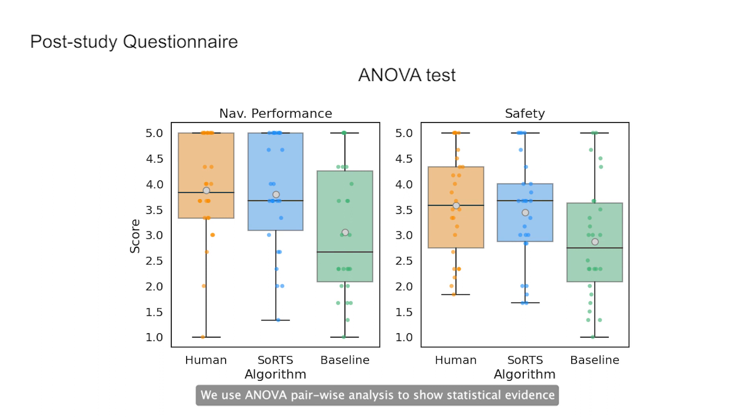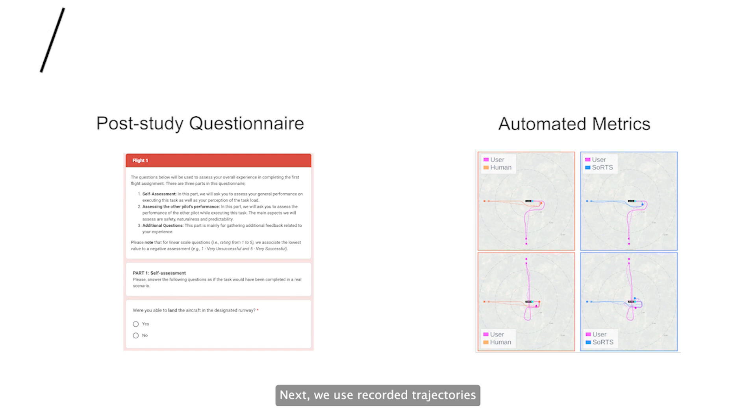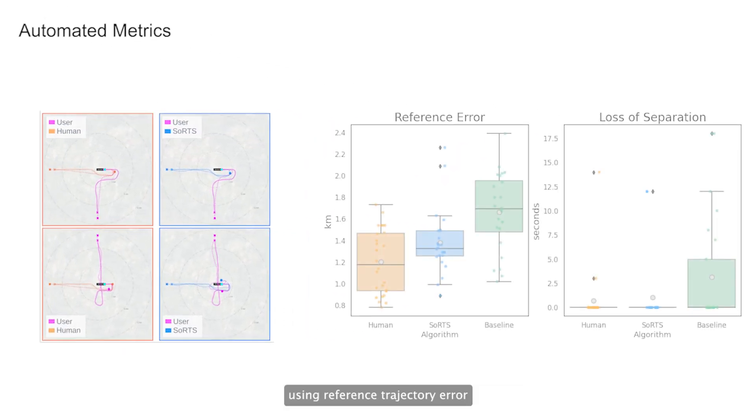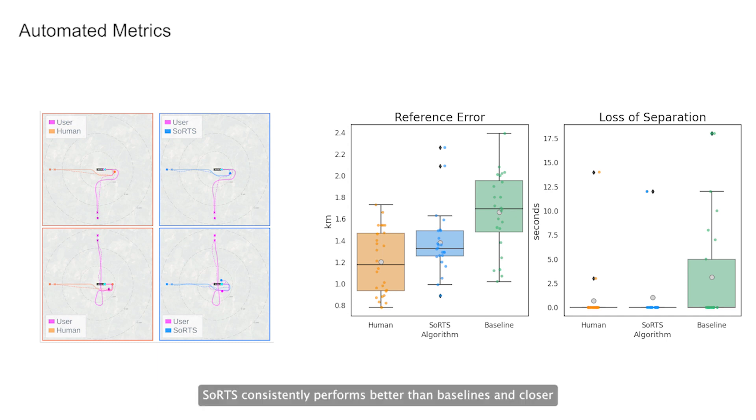We use ANOVA pairwise analysis to show statistical evidence that the baseline was generally rated lower on the axis of competence, while also exhibiting more variance. Next, we use recorded trajectories from the experiments to examine performance and safety, using reference trajectory error and loss of separation metrics respectively. SORTS consistently performs better than baselines and closer to human-level performance.